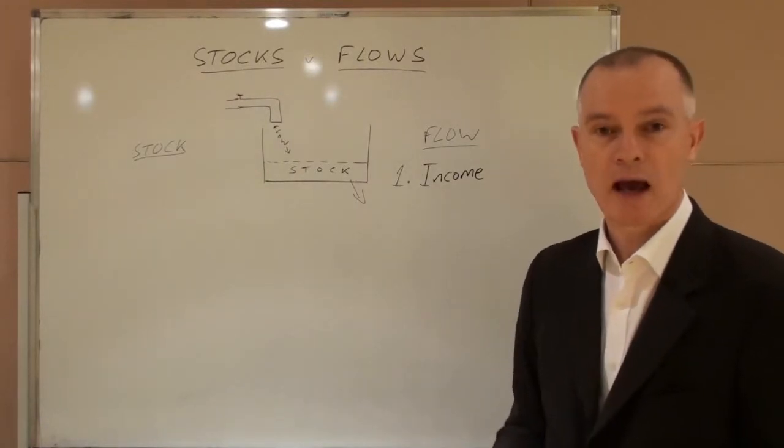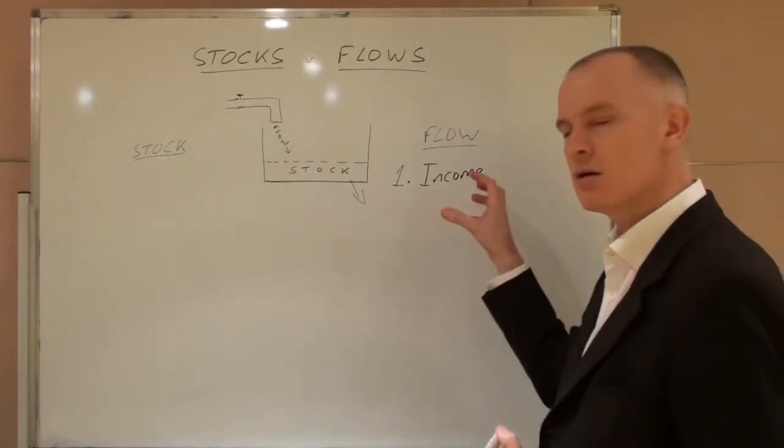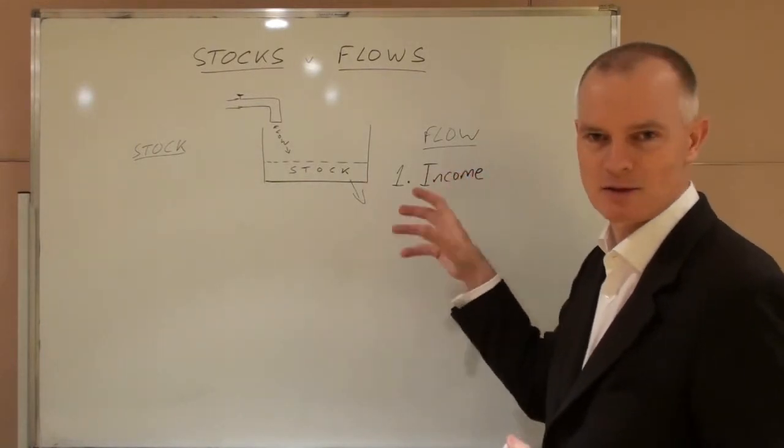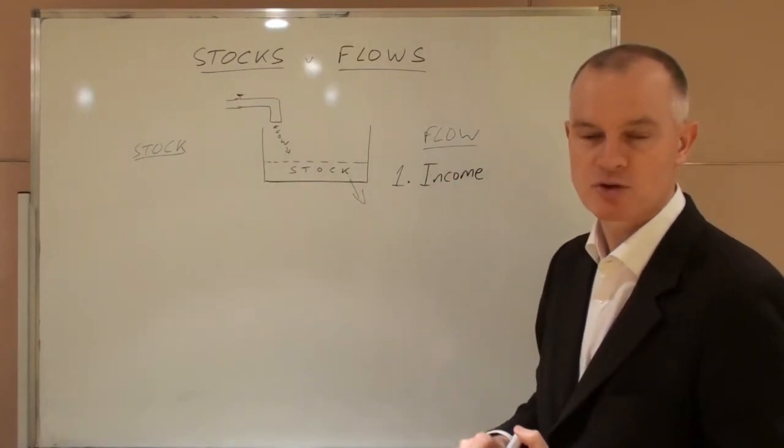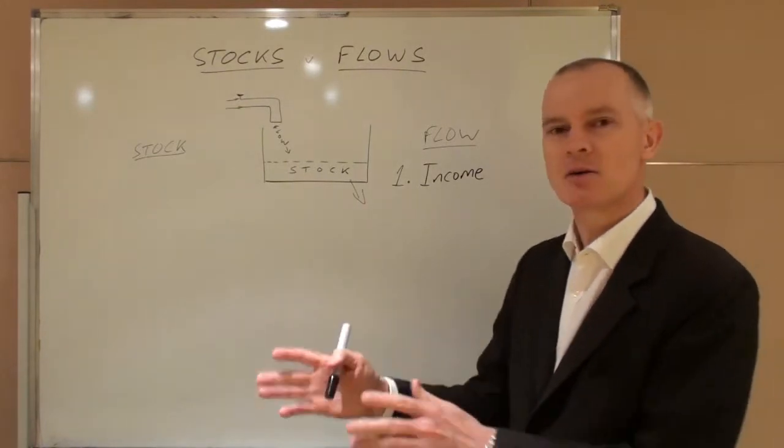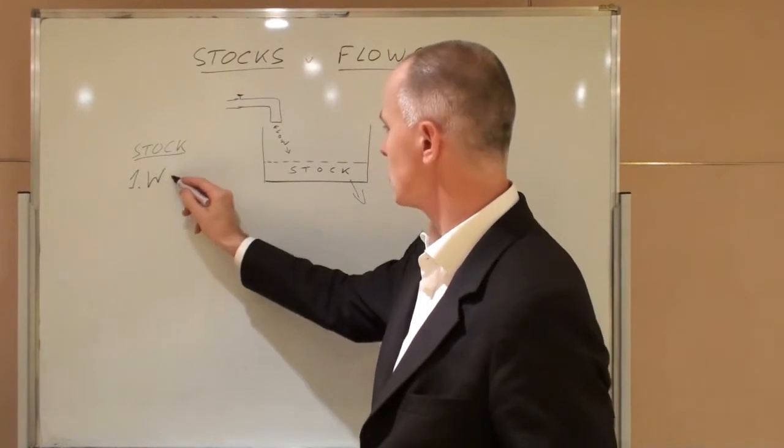Two thousand dollars what? An hour? A week? A month? So income must have, as an identifiable construct, an element of time associated with it. Income adds to the stock of an individual's wealth.